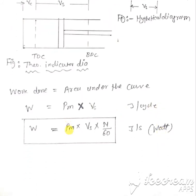Now, if we multiply this with RPM upon 60, then it will convert into Joule per second. Therefore, W dot is equal to PM times VS times N by 60.